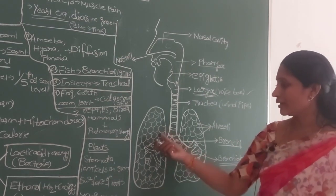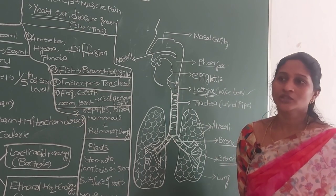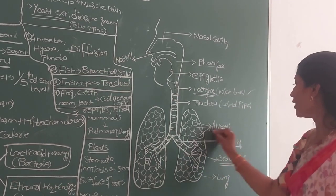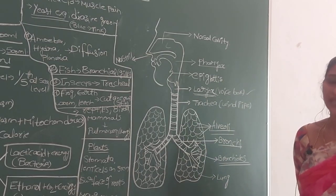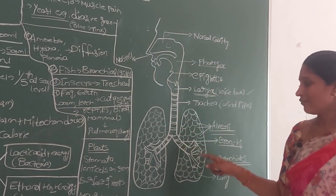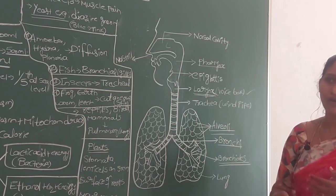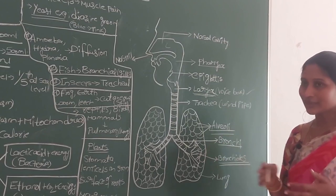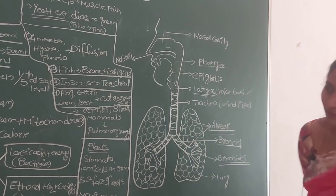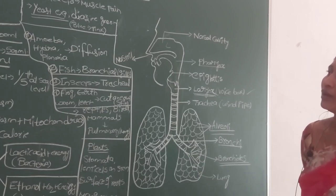Each lung is divided into millions of tiny air sacs called alveoli (singular: alveolus). This is very important because the air we inhale passes through all the airways and finally enters the lungs. The actual exchange of oxygen into the body and expulsion of carbon dioxide takes place in these smallest air sacs — the alveoli. Oxygen from the alveoli then enters the blood capillaries.